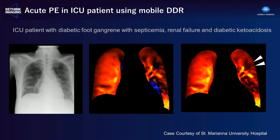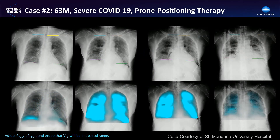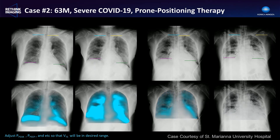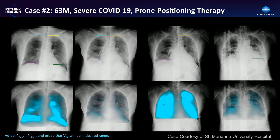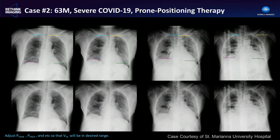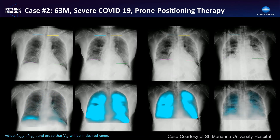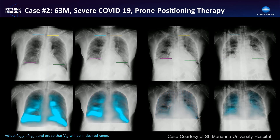This exam is done at the bedside without any injected contrast agent — we're just looking at changes in x-ray attenuation over time. In another case from St. Mariana University in Japan, a severe COVID patient on day two underwent prone positioning therapy. The ventilation images from DDR show that ventilation was improving with this prone therapy, which correlates with measurements from the ventilator. On the eighth day of the patient's course, the lung perfusion and ventilation started to decrease again.